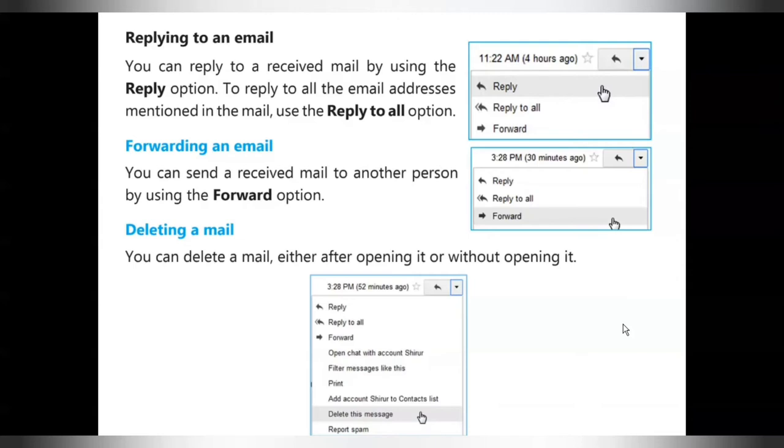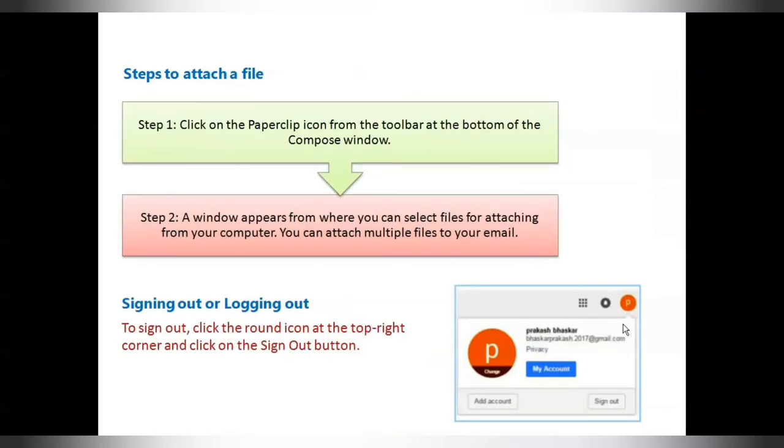To attach the files into your mails, click on the paperclip icon from the toolbar at the bottom of the compose window. Then a window appears from where you can select the files for attaching from your computer. You can attach multiple files to your email. In case you need to attach multiple files, you can use compression utility software such as WinRAR or WinZip to compress and combine all files into a single one to reduce the size of the files being used.